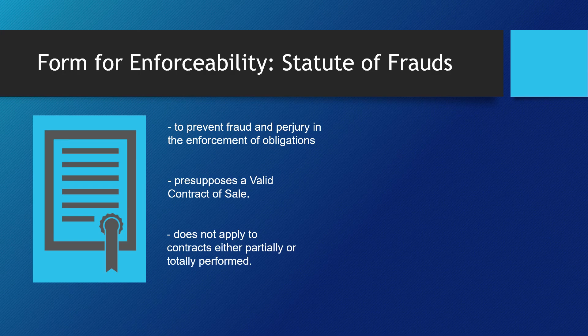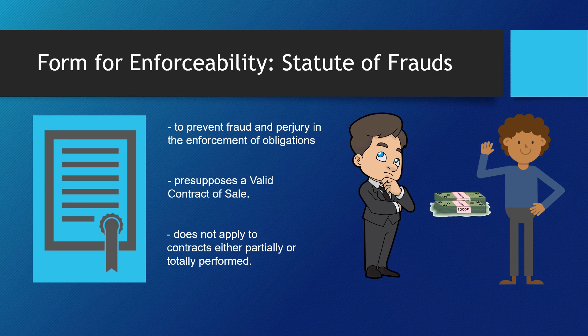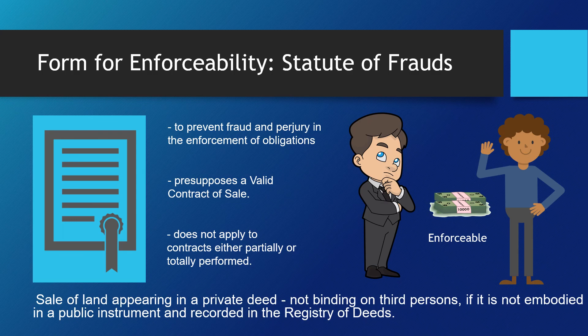A contract that violates the statute of frauds is ratified by the acceptance of benefits under the contract. In our previous example, without a deed of sale, if John accepted the purchase price from Mark as payment for his house, the statute of frauds no longer applies, meaning the contract is already enforceable between the parties. Note, however, that while the sale of land appearing in a private deed is binding between the parties, it is not binding on third persons if it is not embodied in a public instrument and recorded in the registry of deeds.